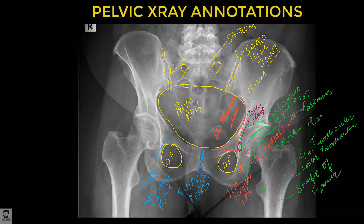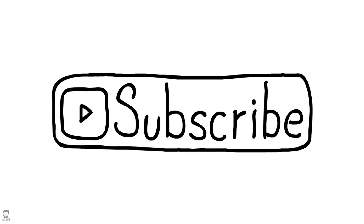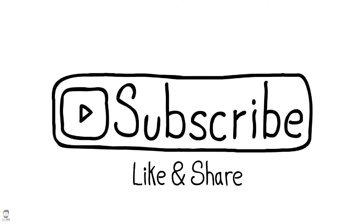And these are called arcuate lines. So these are the main structures on a pelvic x-ray which you need to identify and be aware of. Please do come back for more videos, leave your comments, like and share, and subscribe to our channel. Also please visit navmedvideos.com for detailed lectures and more notes. Thank you, please keep coming back.